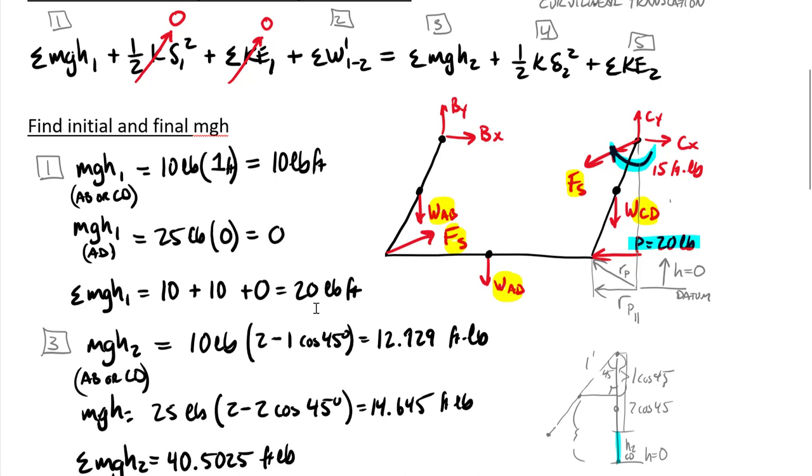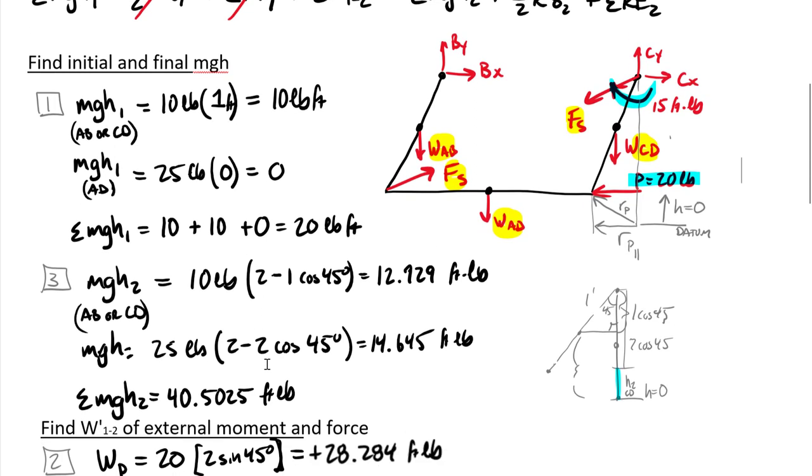As I look at my MGH of my horizontal member AD initially, it's down at that same elevation as my datum, therefore the H is zero, therefore it has a gravitational potential energy initial of zero. I add these together: two arms AB and CD and then the horizontal beam AD. I get a total of 20 pound-feet for that value. Now I went ahead and jumped into my final MGH.